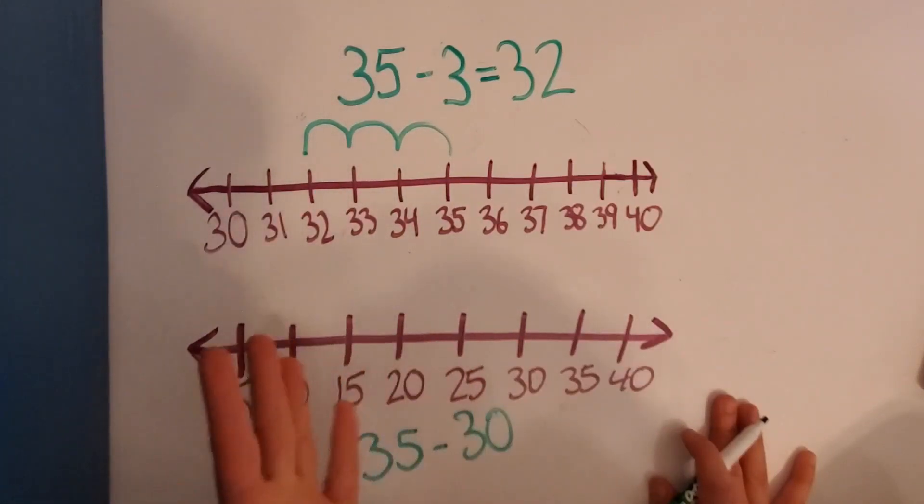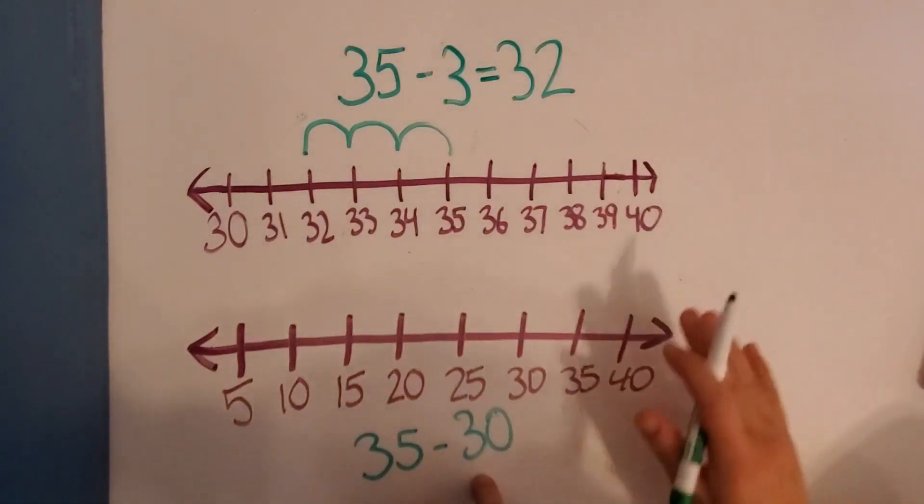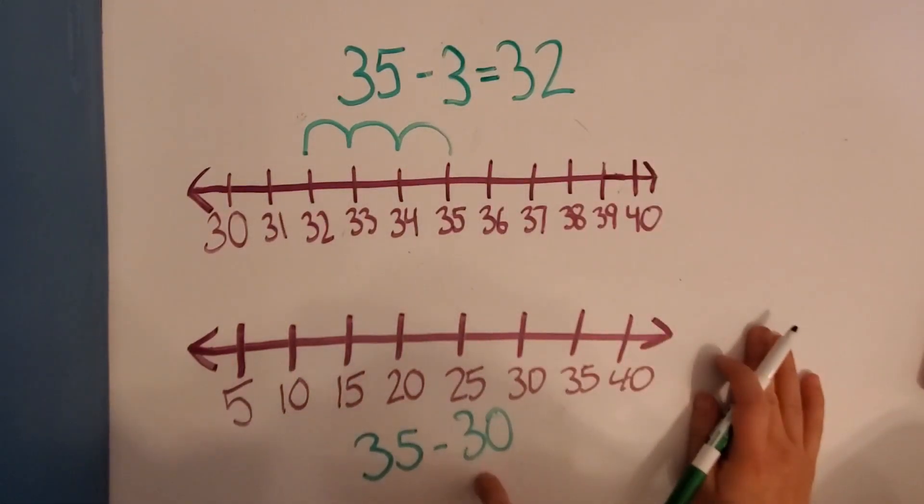Okay, so to subtract 35 minus 30 mentally in our heads, instead of going back by 1's, because that would take a long time and we would totally lose track of what number we're on, we are going to subtract by 10's.